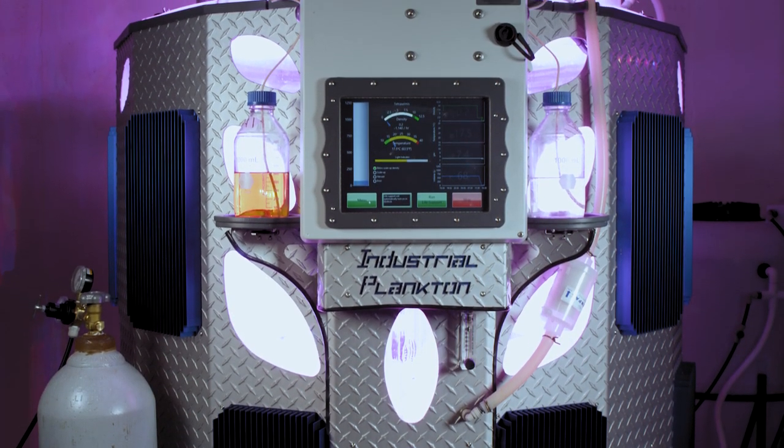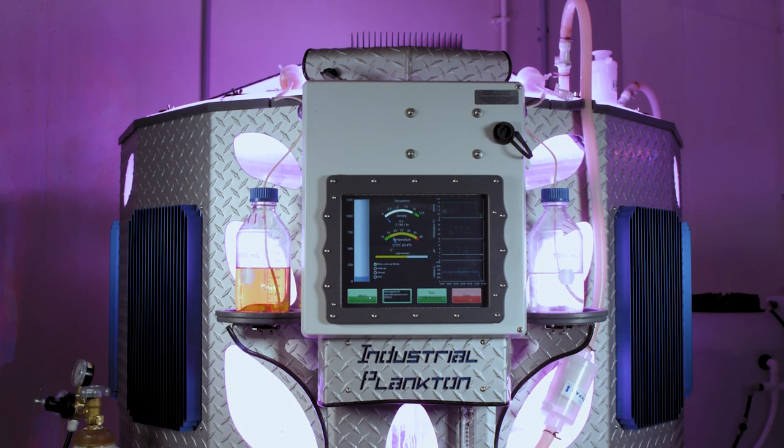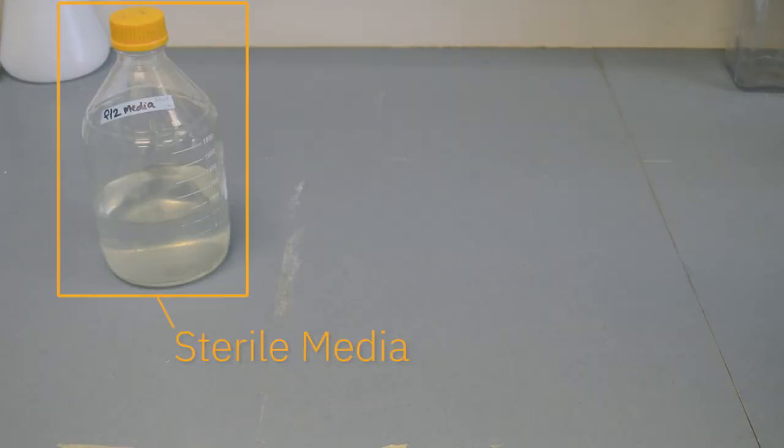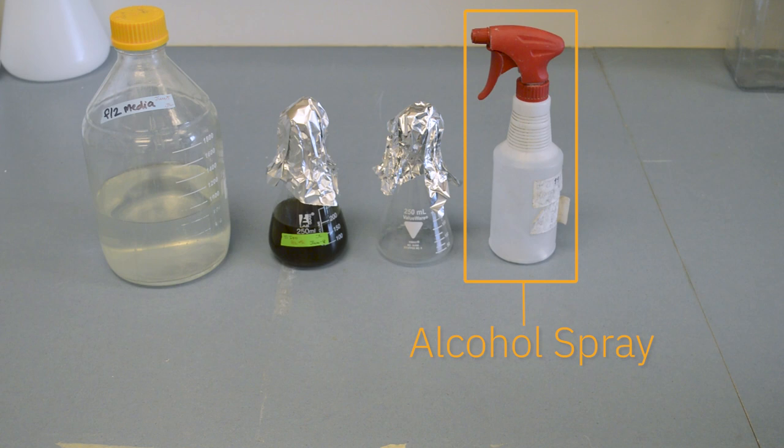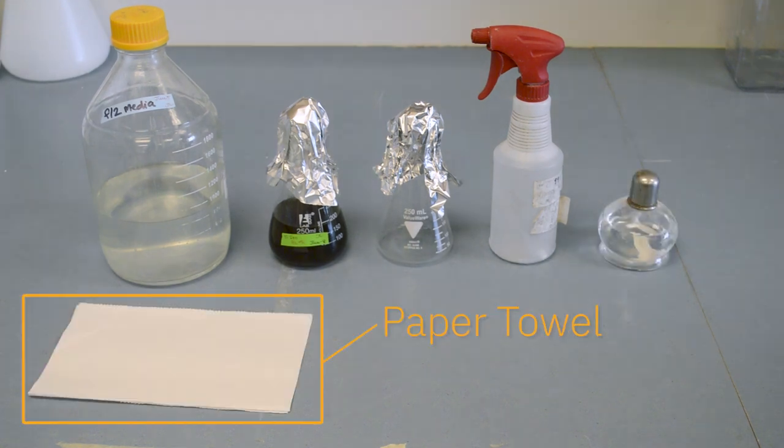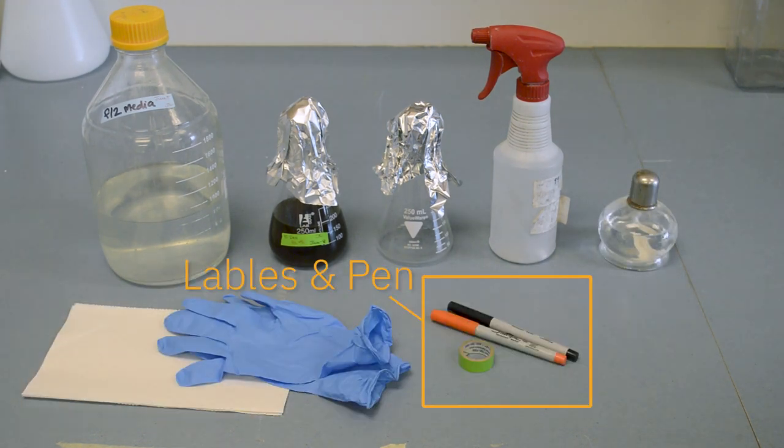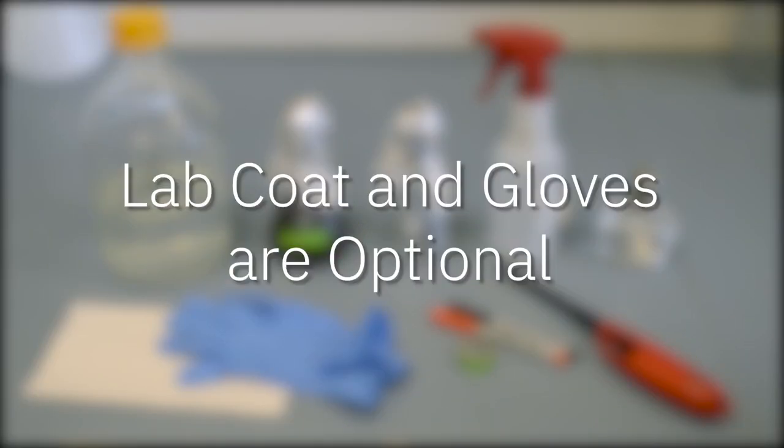To transfer your algae you will need an empty workspace, sterile culture media, your parent culture, a sterile empty flask, alcohol spray, a flame source, paper towel, gloves, labels and a pen, and a lighter. Lab coat and gloves are optional for this procedure.